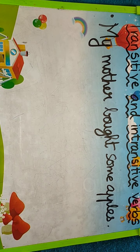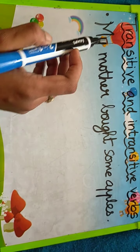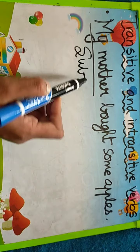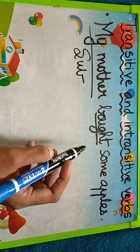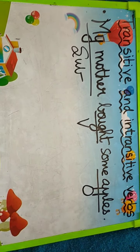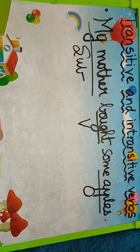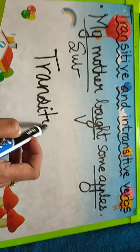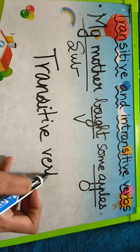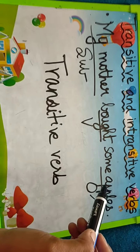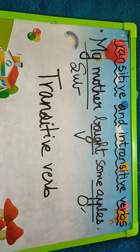Now look at the next sentence: 'My mother bought some apples.' Here, 'my mother' is the subject, 'bought' is the verb — it is an action word — and 'some apples' is the object. Here also, the verb is a transitive verb, because we can see there is an object. So the verb here is a transitive verb.